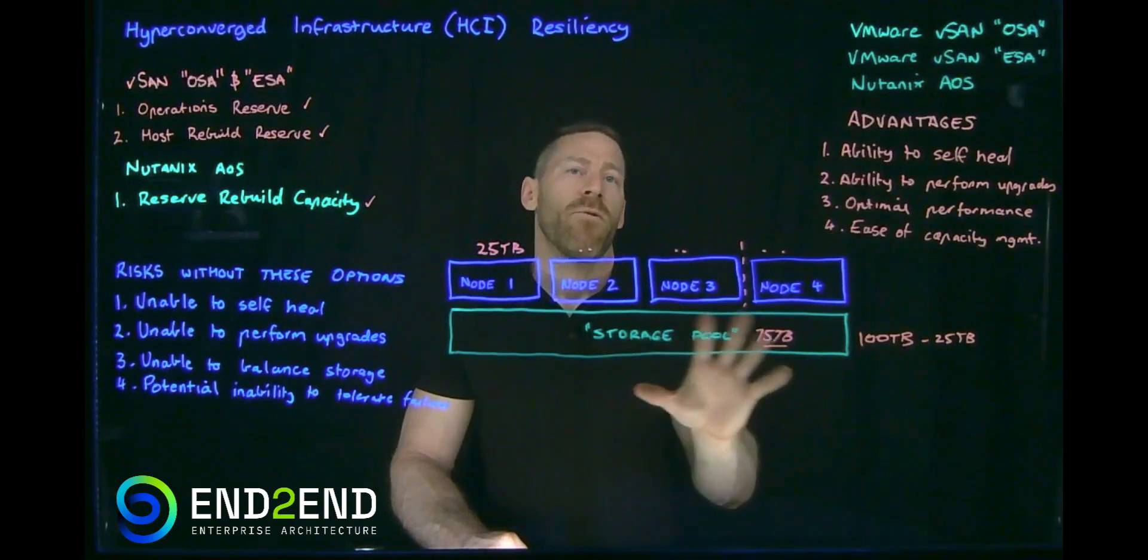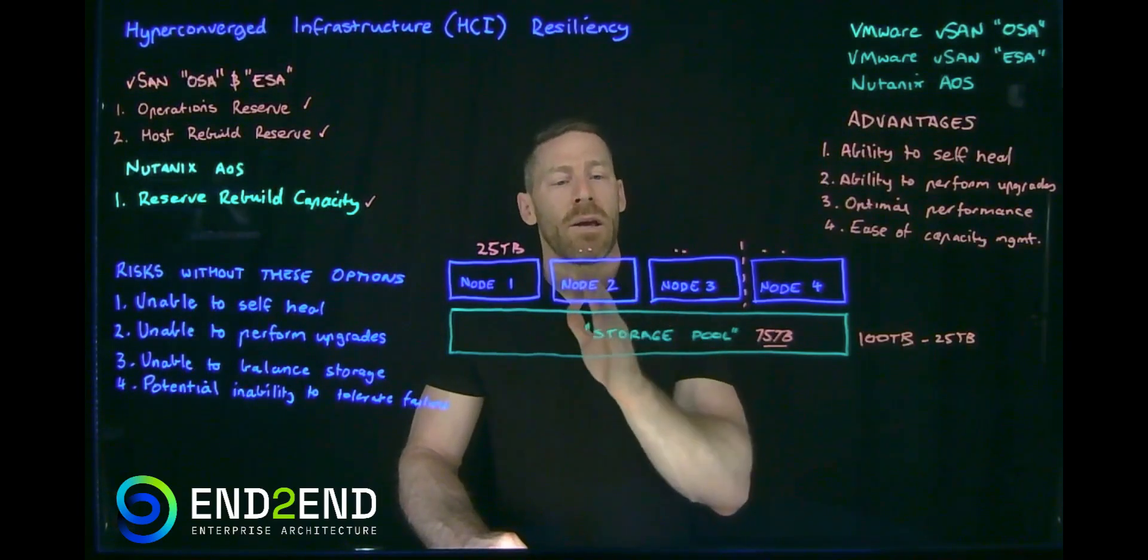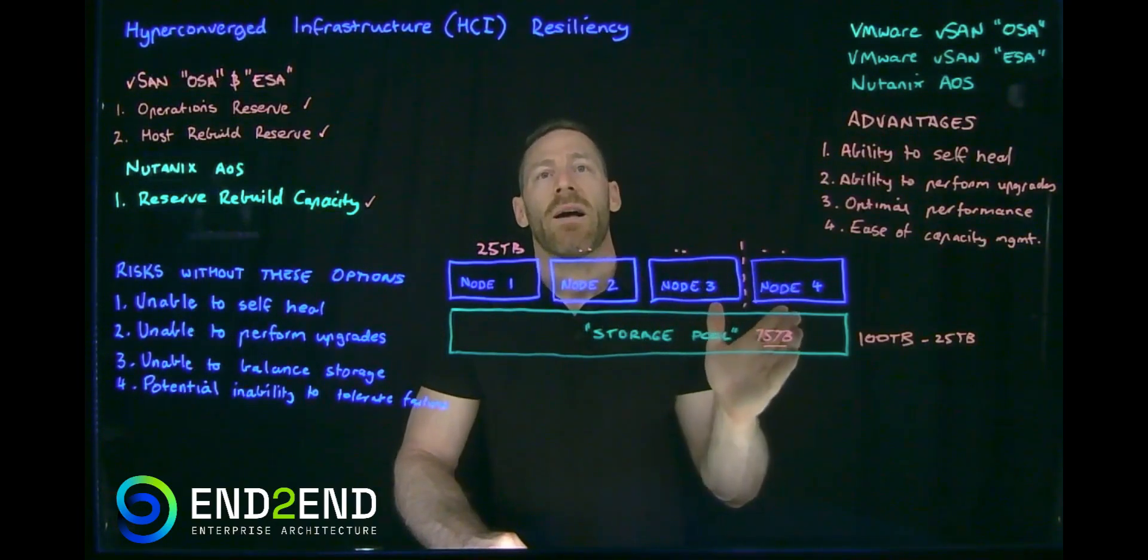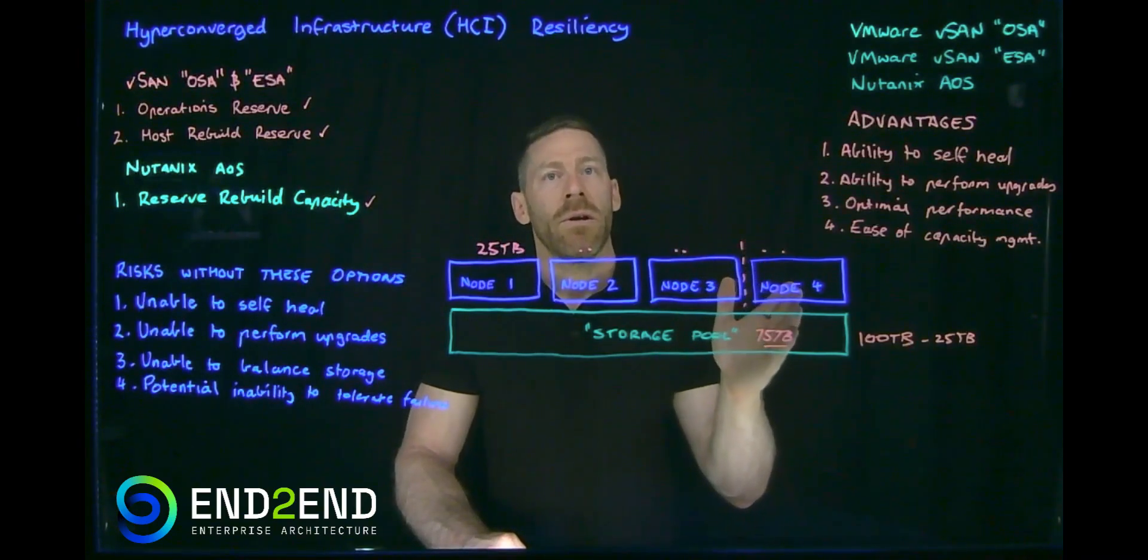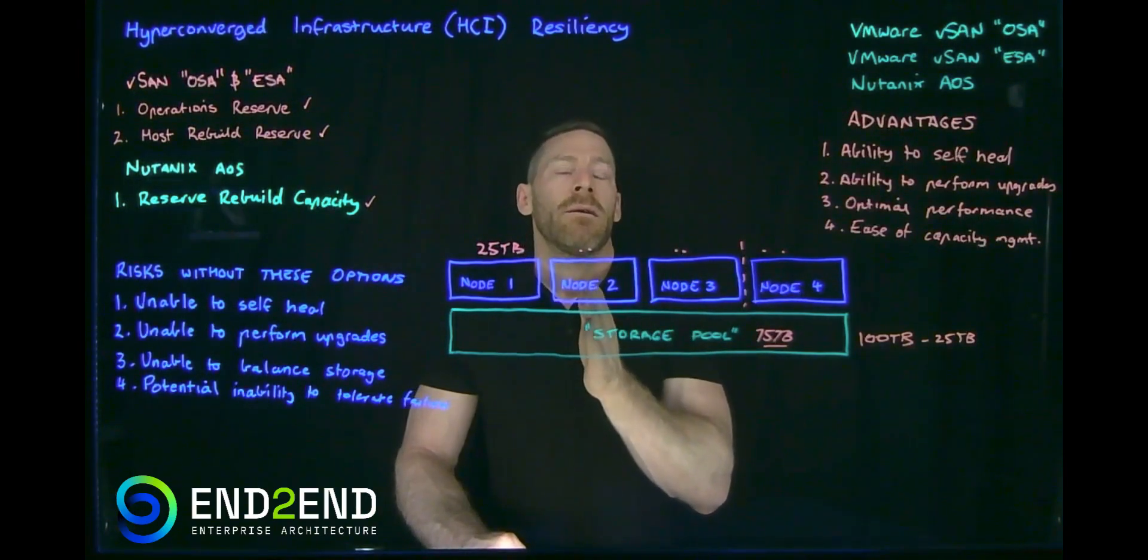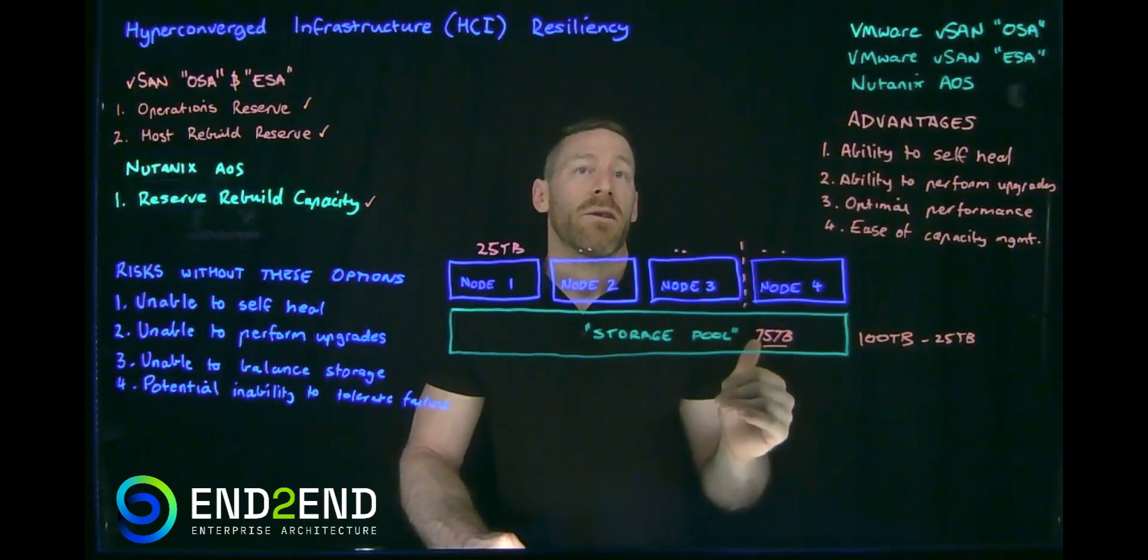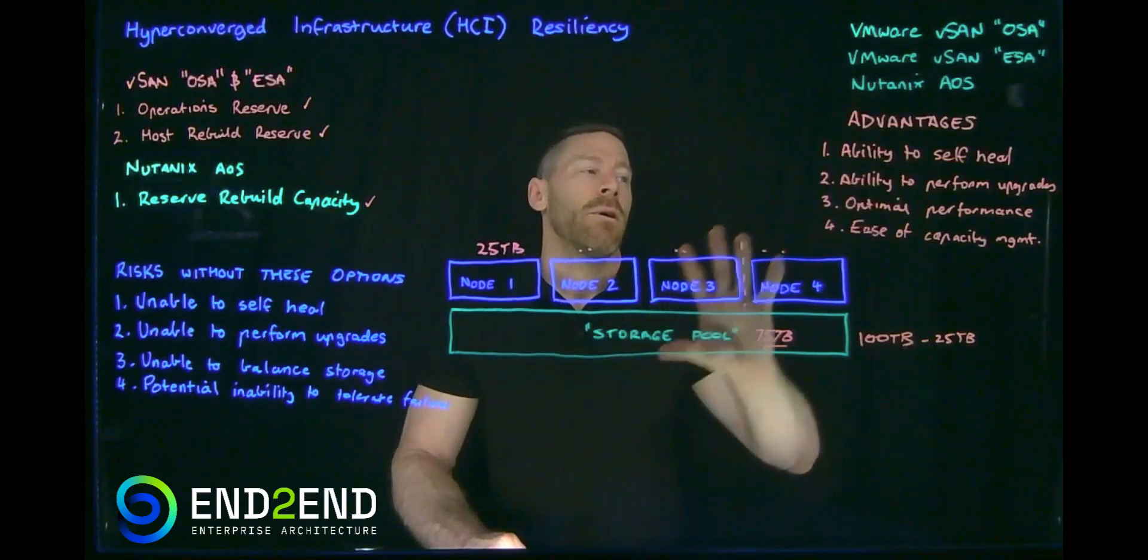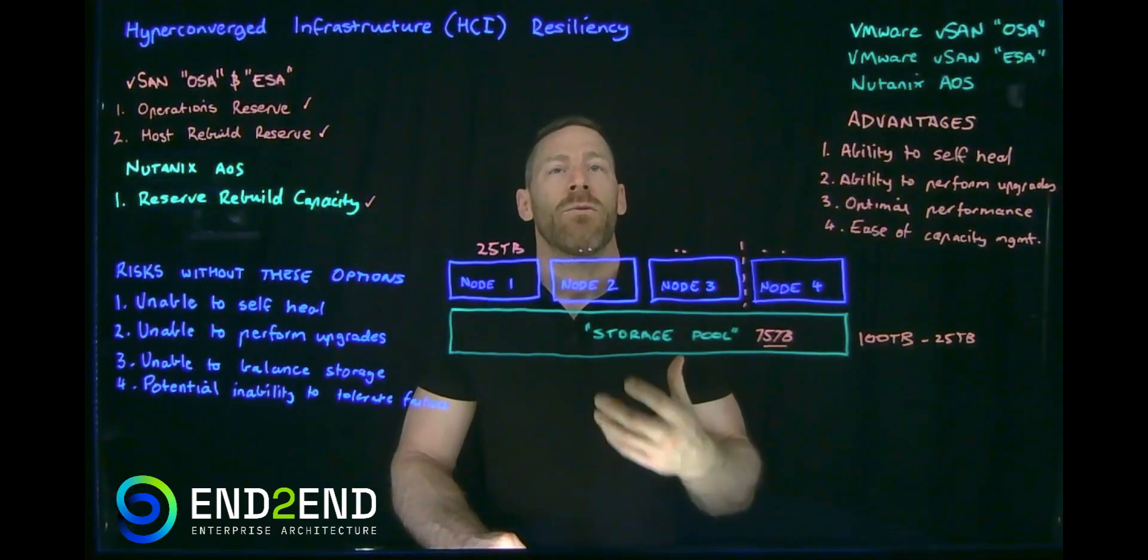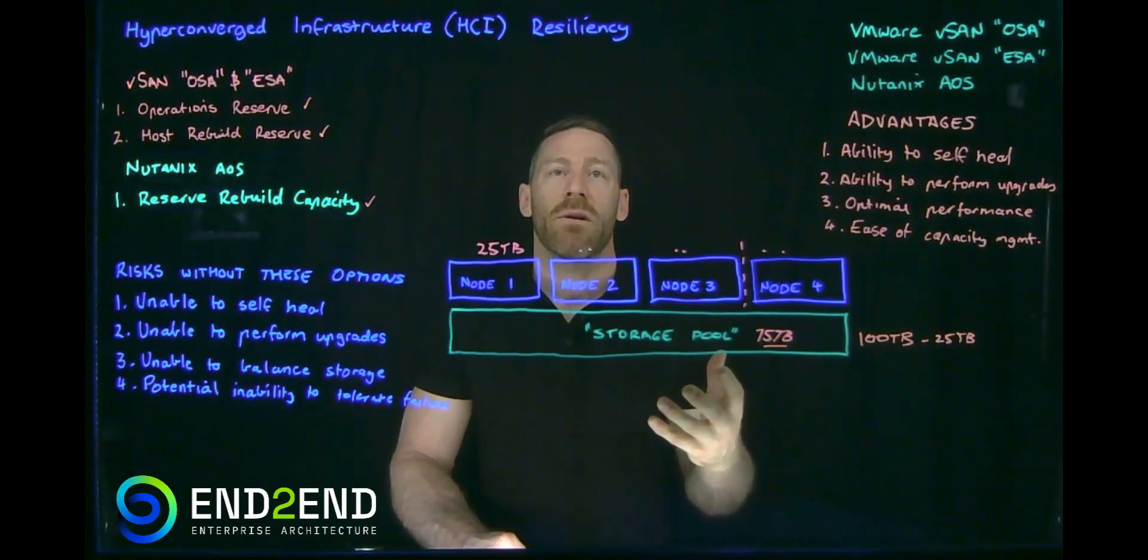The third one, performance is always important. Now if we fill this cluster up too far, our performance will certainly degrade. But in the event we lose a node and we've ran out of capacity, our performance can also degrade significantly. So really important, if we have these settings enabled, the cluster will perform at its best, which is of course what we want for our business-critical applications.